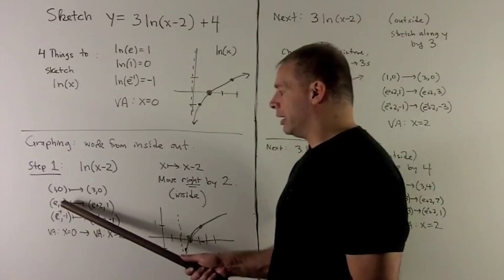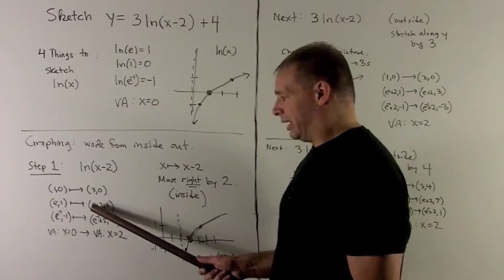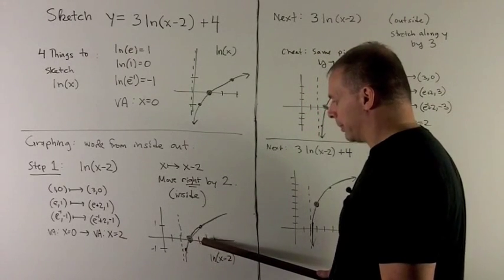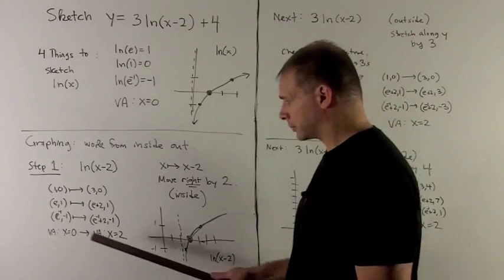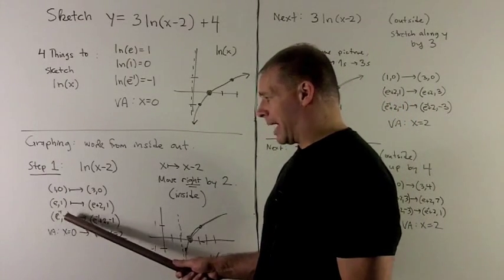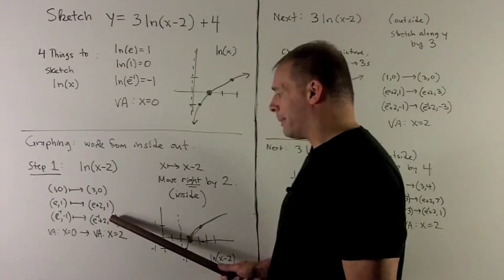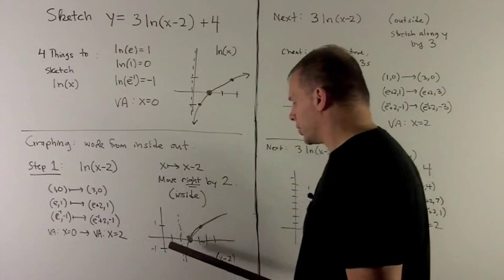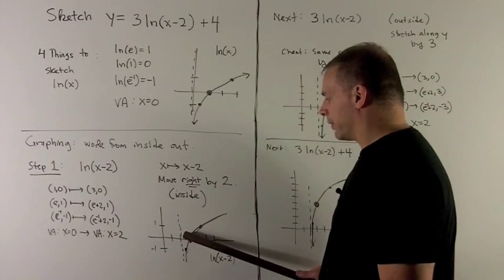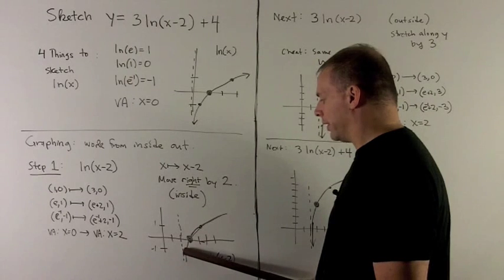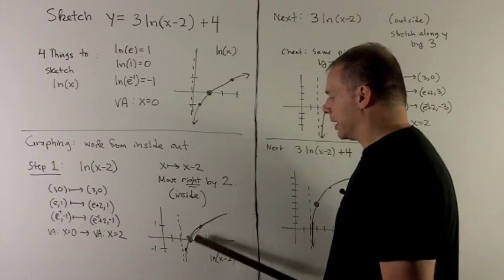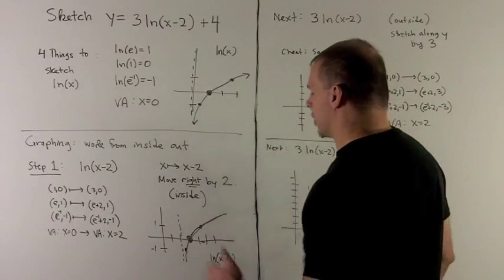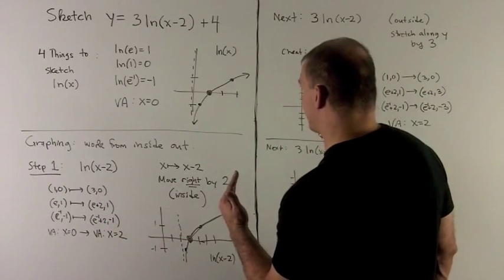And then we note that e comma 1 is going to go to e plus 2 comma 1. E plus 2 is roughly 4.7, so 1, 2, 3, 4, come in a little bit, and then we go up by 1. E to the minus 1 minus 1 is going to go to e to the minus 1 plus 2 minus 1. So that's going to be roughly 2 and 1 third minus 1, so go over 1, 2, go out a little bit for the 1 third, come down 1, and that gives me the point there. So again, we can connect the dots, and that's going to give me natural log of x minus 2. So everything just comes over to the right by 2.